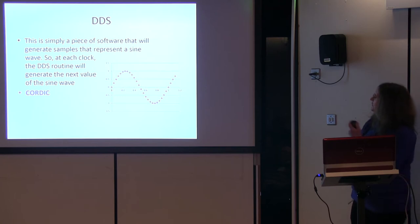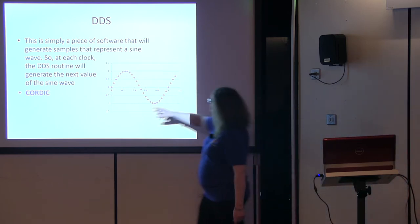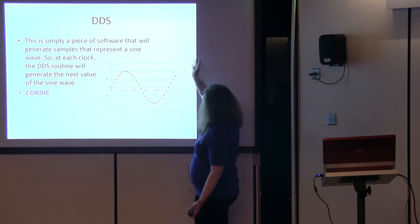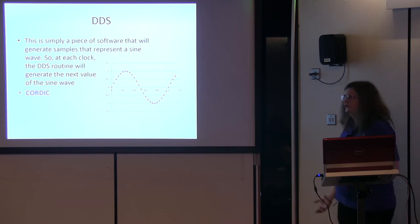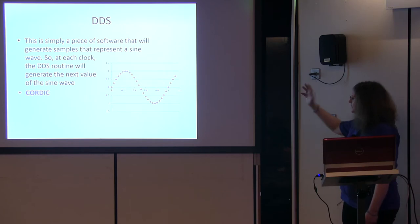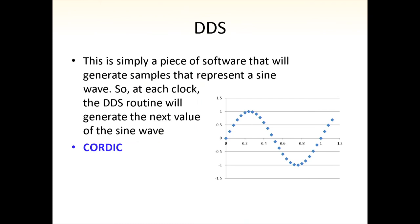DDS — Direct Digital Synthesis — is another key building block. It simply creates samples that represent a sine wave: as time goes by, this bit of software produces numbers representing points on a curve. Very useful for all the mixing we want to do in software — we create samples that look like our sine or cosine. CORDIC, quite an old method of generating sines and cosines, has been repurposed into FPGAs, and that's where this sort of thing lives now.